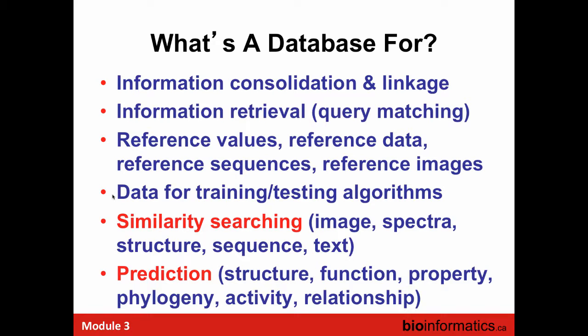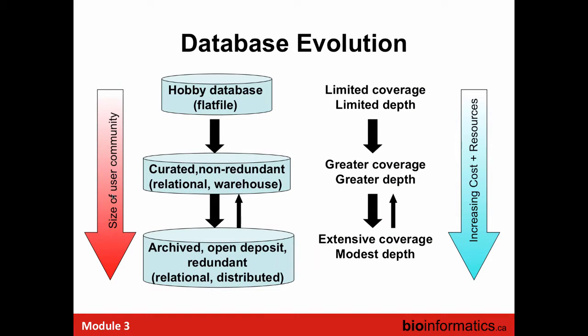People use many databases to train algorithms — that's how spectral prediction tools and chemical comparison algorithms are trained. Similarity searching is a newer phenomenon; before, it used to be exact matching, but now you can look for similar images on Google Images, similar structures and sequences with BLAST, and now spectral similarity searches. Through databases we can do things like prediction because we've been able to train algorithms. Databases are fundamental — they lie at the base of a pyramid, and everything above relates to algorithms that use those databases.